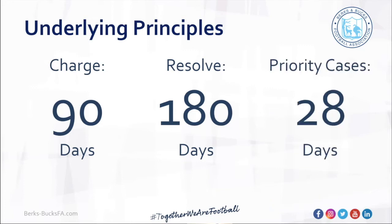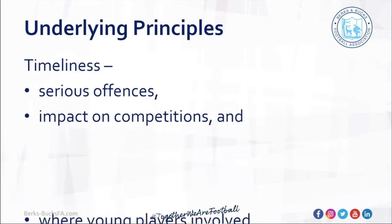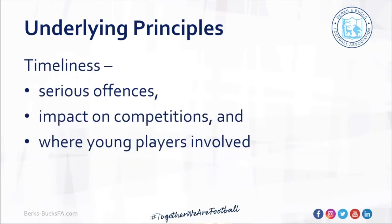We have priority cases which we're required under FA regulations to hear within 28 days. Those are cases where an immediate suspension has been issued because of the severity of the case. It also applies for cases of playing under suspension or where a match has been abandoned, because we appreciate there is a massive impact on the competition — they have to wait until we've taken action before the league can take action and get over the outcome of the game.